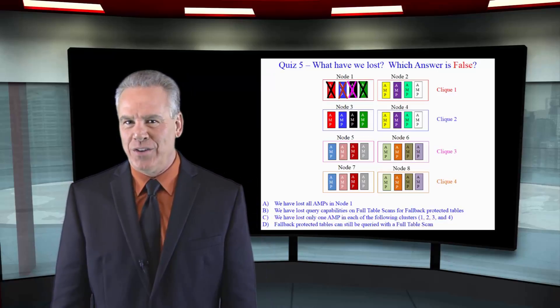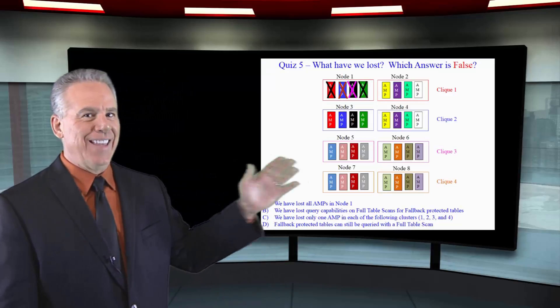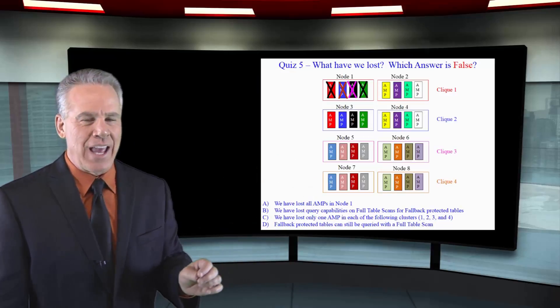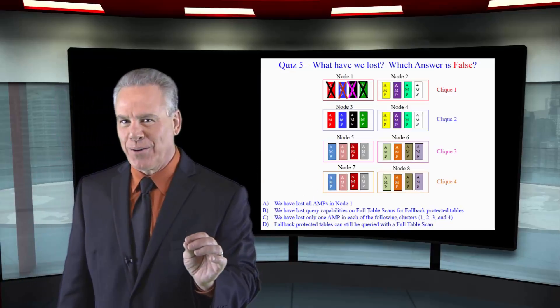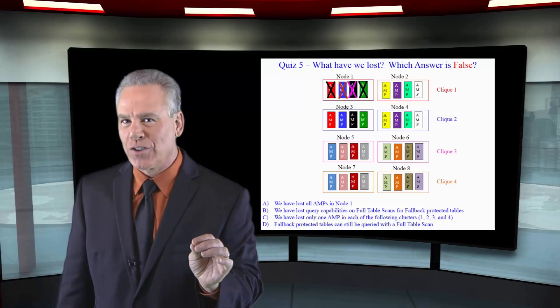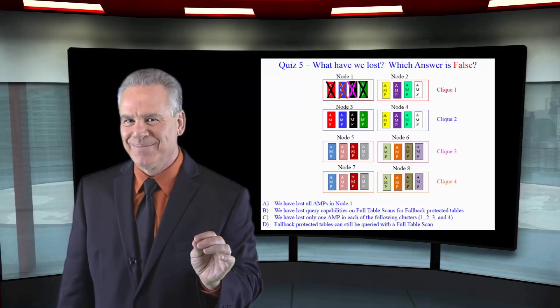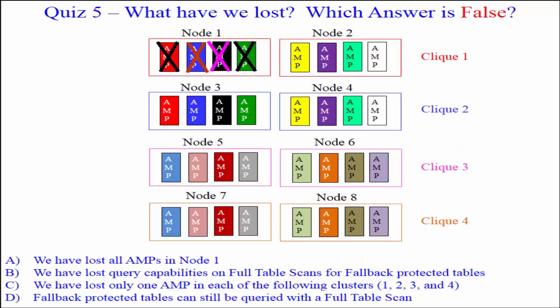Changing gears on you. Take a look at this picture. And I'm going to ask, which answer is false? What have we lost? Which answer is false? Is the false answer A: We have lost all AMPs in node 1. B: We have lost query capabilities on full table scans for fallback protected tables.